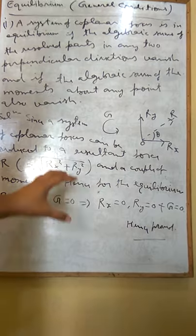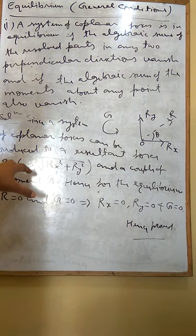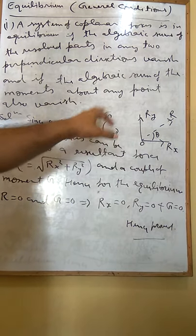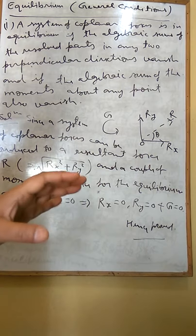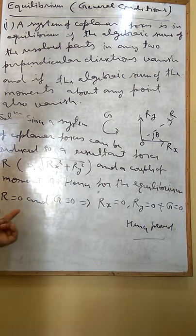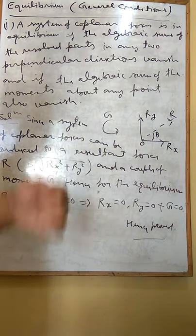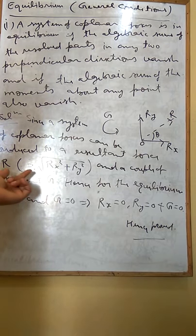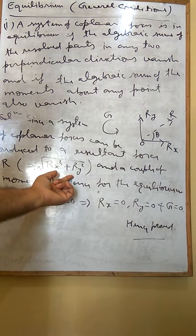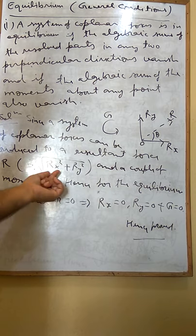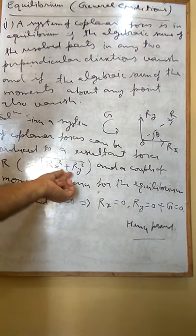Hence, for the equilibrium, this R must be zero and this G must be zero. Both of them must separately be zero. It means R equals zero and G equals zero. But R is the square root of Rx squared plus Ry squared, so R will be zero if this Rx squared is zero and this Ry squared is zero. It means this Rx will be zero and Ry will be zero.